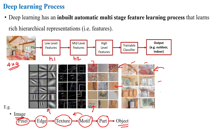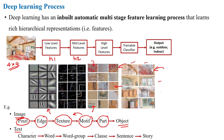The classification is done at the final stage. For text input, a character is given into the input layer, which identifies the word, then a group of words, and finally forms a sentence — ultimately framing a story from each character. These are some examples of deep learning architectures.